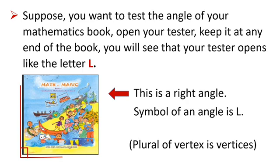Let us see how. Suppose you want to test the angle of your mathematics book. Open your angle tester and keep it at any end of the book. You will see that your tester opens like the letter L. This is a right angle. When a tester opens like the letter L, when kept at the corner of any object, we say it is a right angle. So, any object which is of a square or a rectangular shape will have right angles on all four vertices.